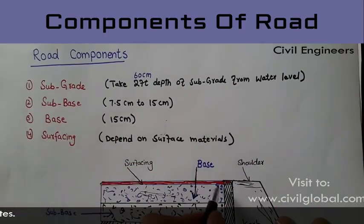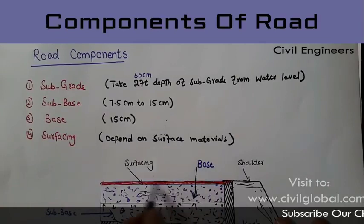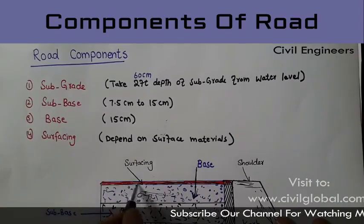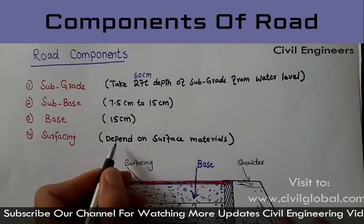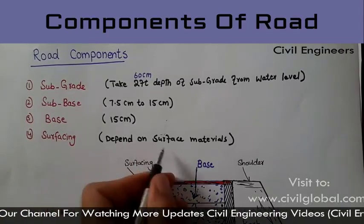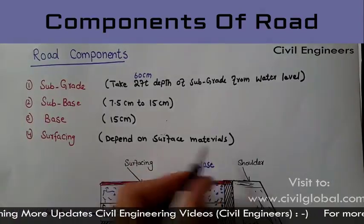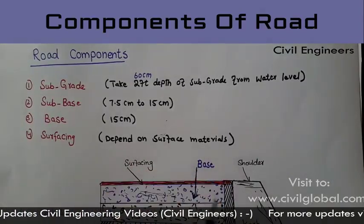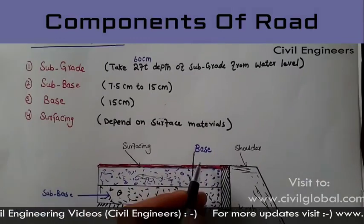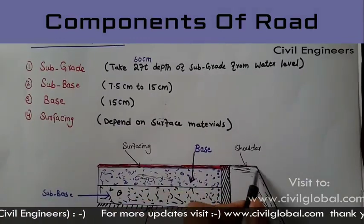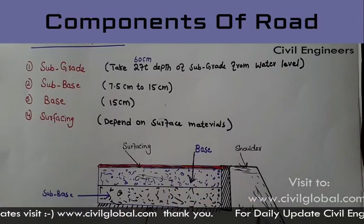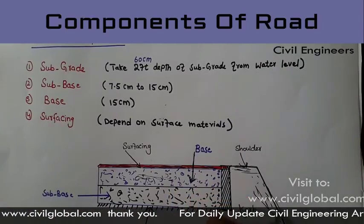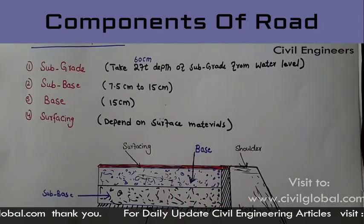And the fourth one is surfacing, also called topping. The surfacing depends on the surface material. In this section you can also see the shoulder of the road and the curb.